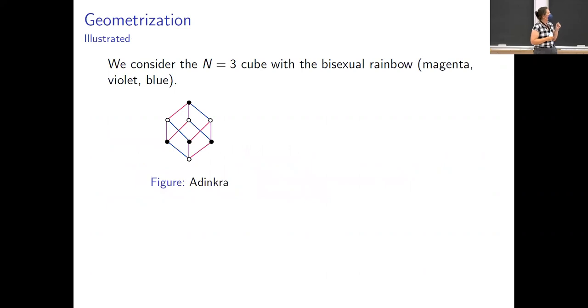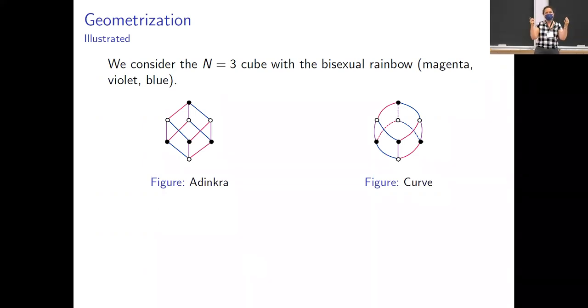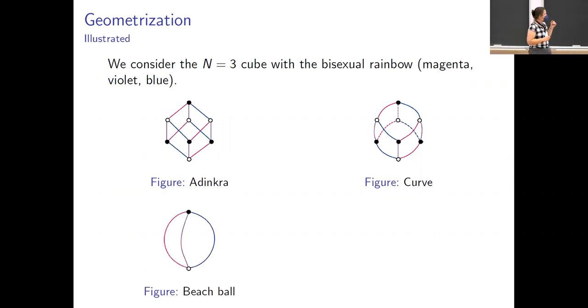So let me draw a picture for you. Let's take the n equals three cube. We're going to take our bisexual rainbow. That means we're doing magenta and violet and blue. And I'm going to start. What I've got so far is just something that's a graph. I want to imagine gluing in some squares to my graph. So I'm going to glue in the magenta-violet squares. I'm going to glue in the violet-blue squares. Then I'm going to loop around because we've got circular rainbows and glue in the blue-magenta squares. And you can imagine that I'd get a curve here. You're supposed to be imagining that the curve is a sphere. It's what we've got if we just sort of spatialized and filled in all of the possible facets here on this sphere-like object.